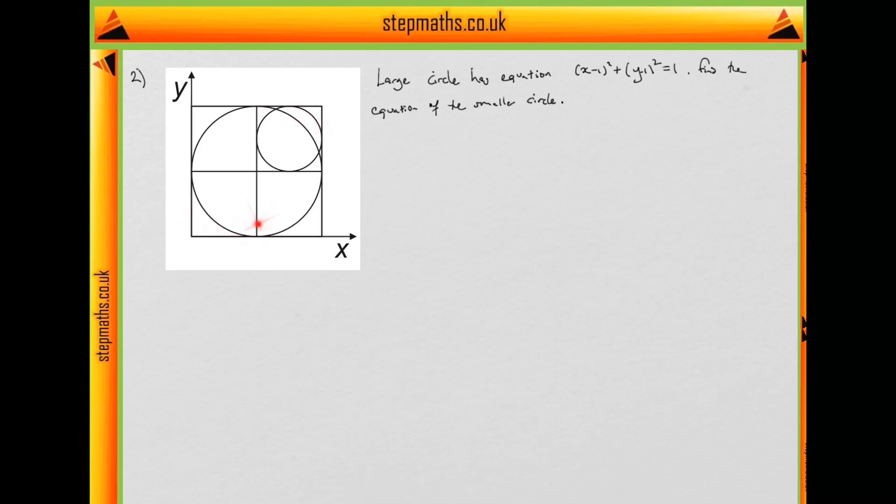In question 2, we're given this figure with a large circle and a small circle inside a square. We're told the equation of the large circle is (x - 1)² + (y - 1)² = 1, and we're asked to find the equation of the smaller circle.